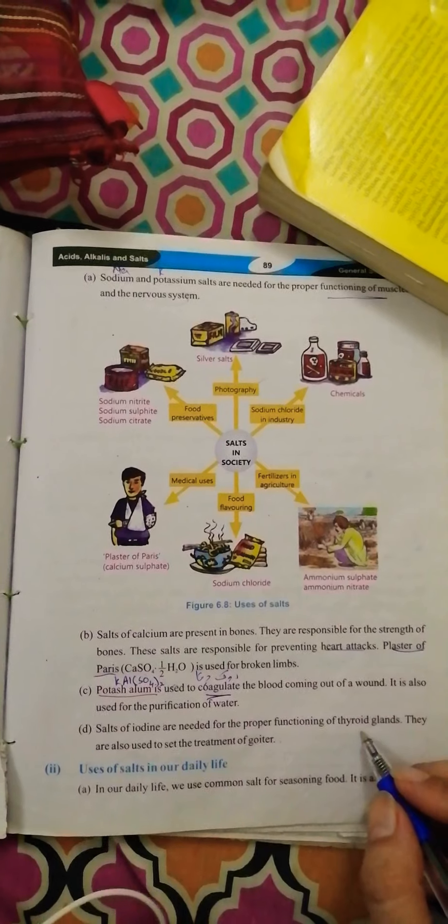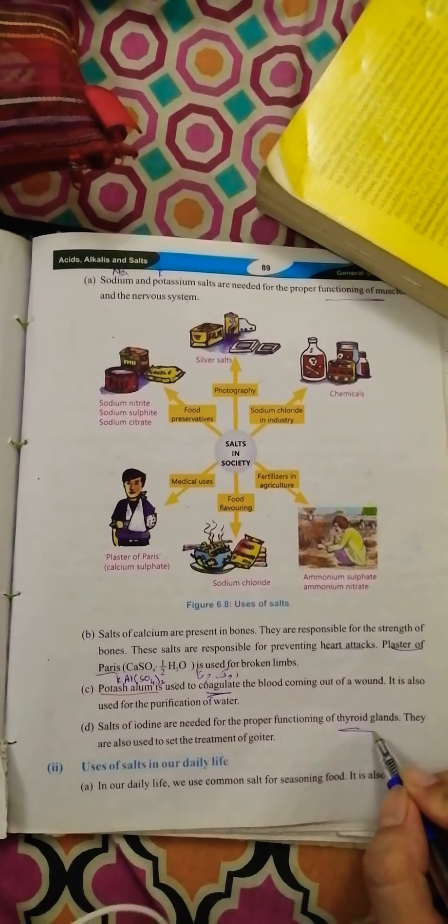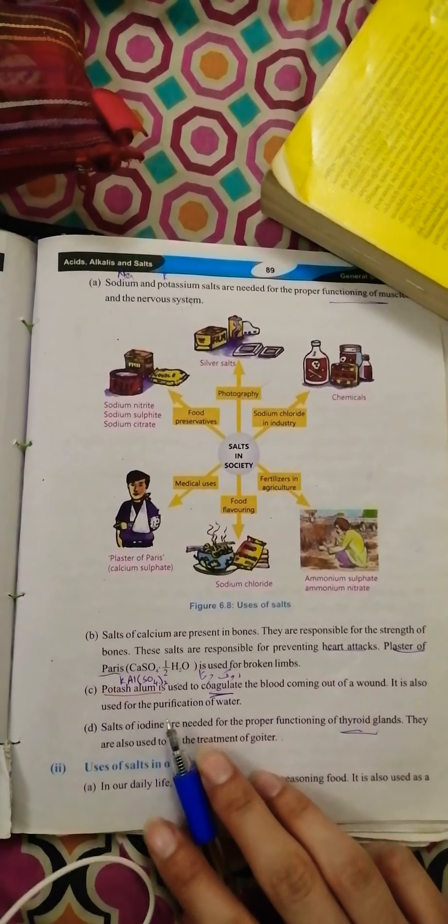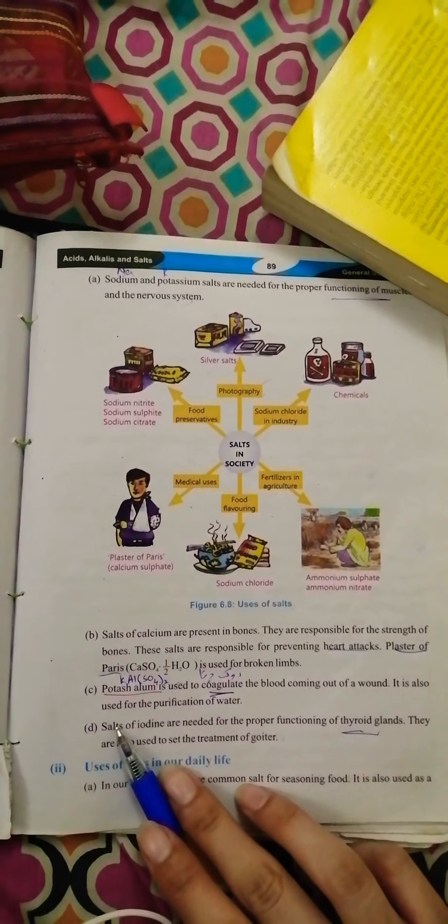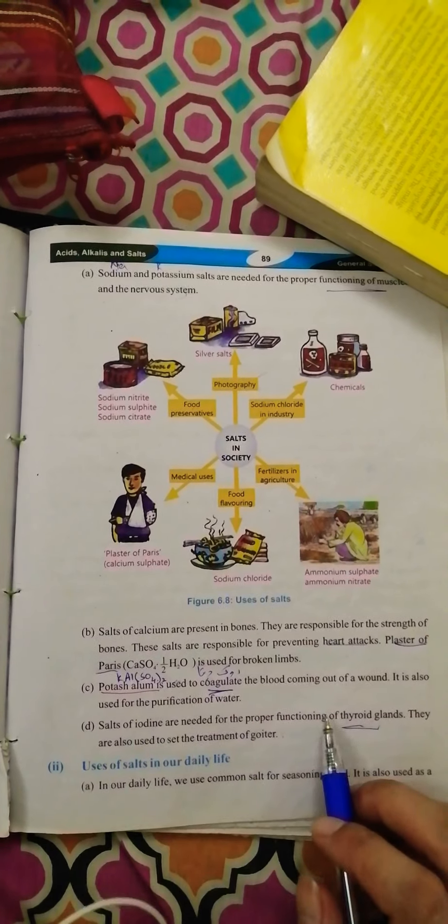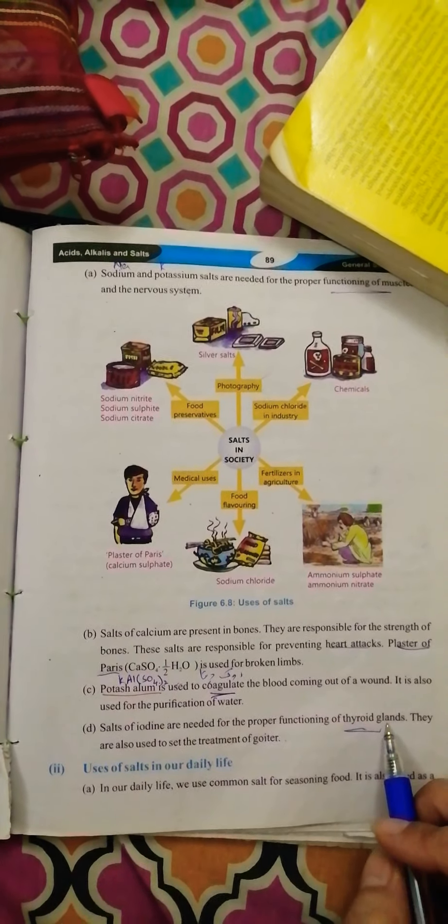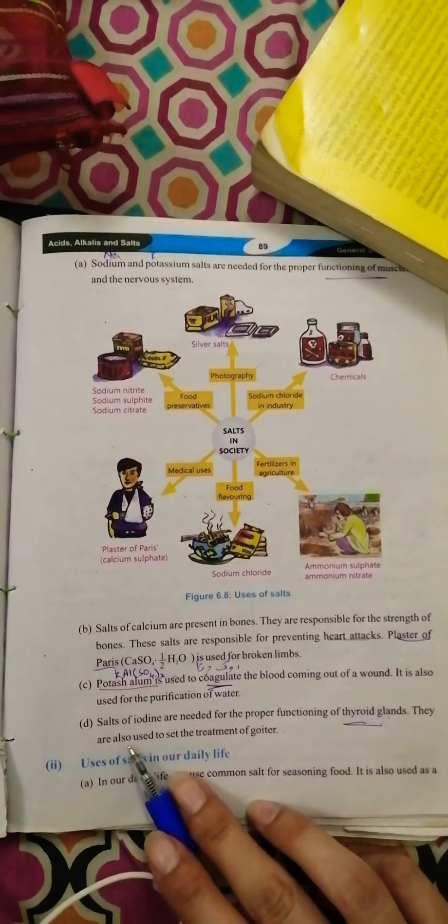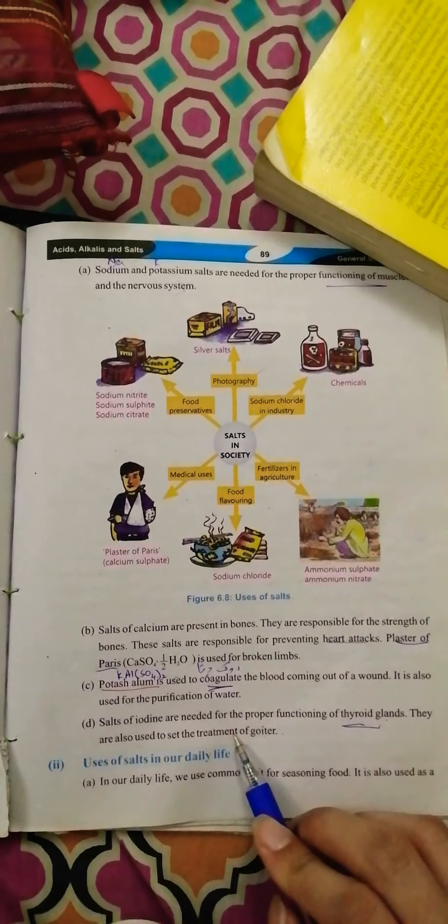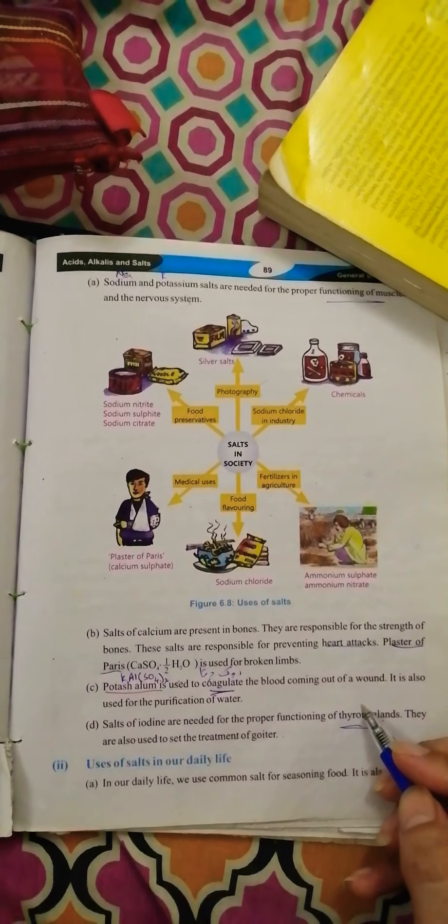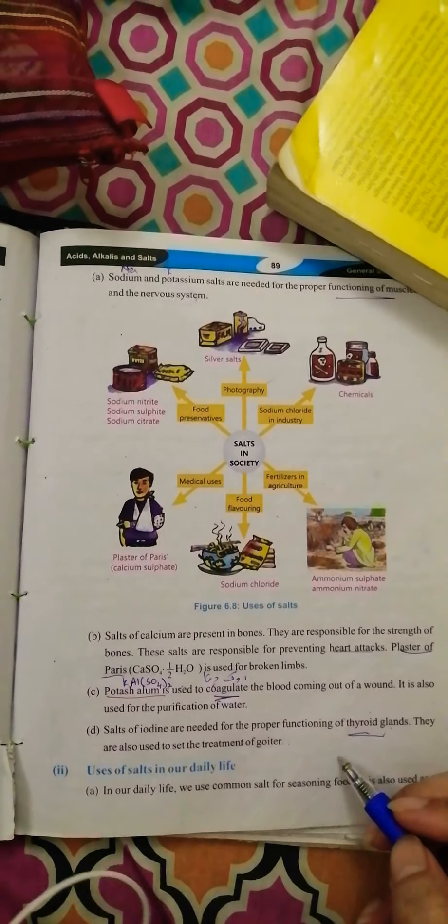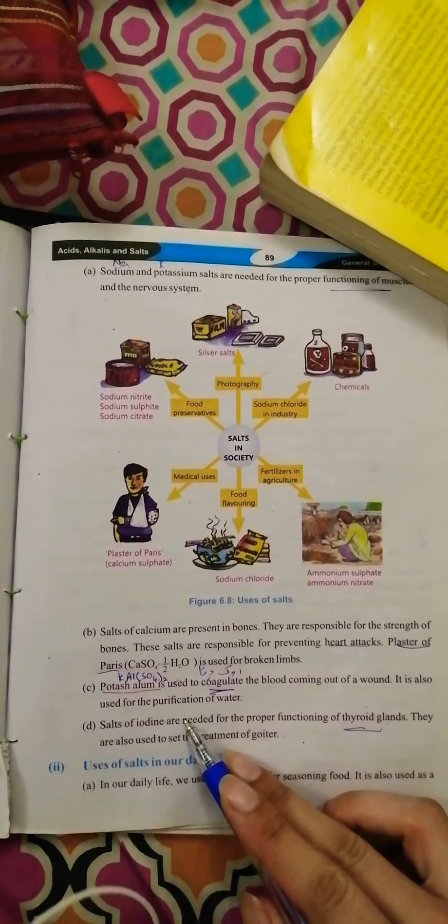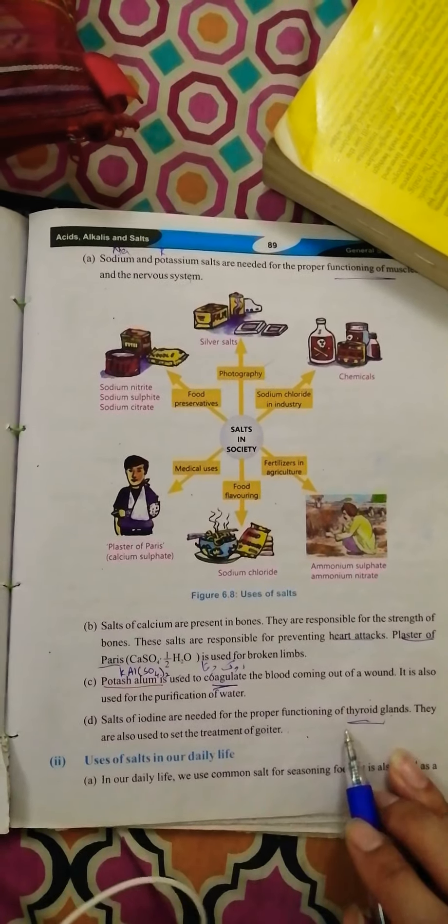Iodine salts are also used in your body and a deficiency results in a disease that is known as goiter. It is caused by a deficiency of these iodine salts, so iodine salts are necessary for functioning of the thyroid glands.